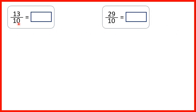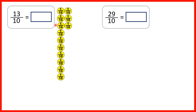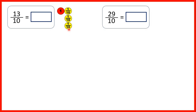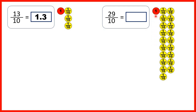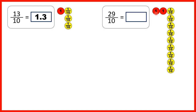We had thirteen tenths and needed to write that as a decimal. If we show thirteen tenths, we can exchange ten of our tenths for one whole. That gives us one and three tenths, which we write as 1.3. And if we have twenty-nine tenths, we can swap ten tenths for one whole, and then swap another ten tenths for another whole. That means we have two wholes and nine tenths altogether, so that's 2.9.